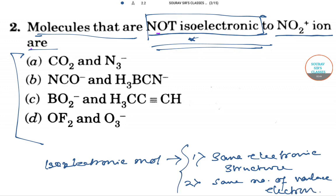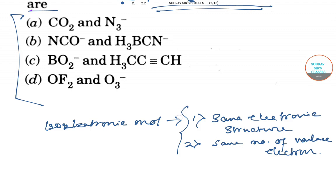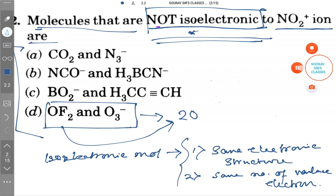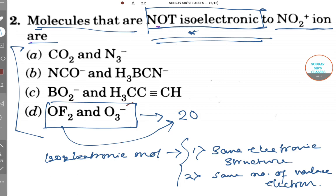These are the main characteristics of isoelectronic molecules. Now in the given question, the option is OF2 and O3- which has different valence electrons - they have 20. OF2 has 20, let me change the color. And O3- has valence of 19.